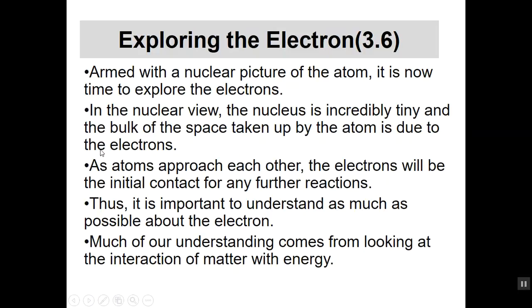An example: if you take the period at the end of a sentence and put it at the center of a football field on the 50-yard line, that's about the size of the atom from one end zone to the other, and the nucleus is as big as that period. What's important is that as atoms approach each other, the electrons will be the initial contact, and they're governed by the number of protons but are the most active players in interactions.